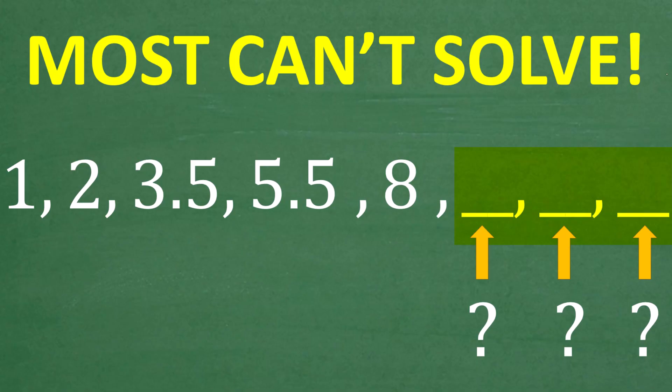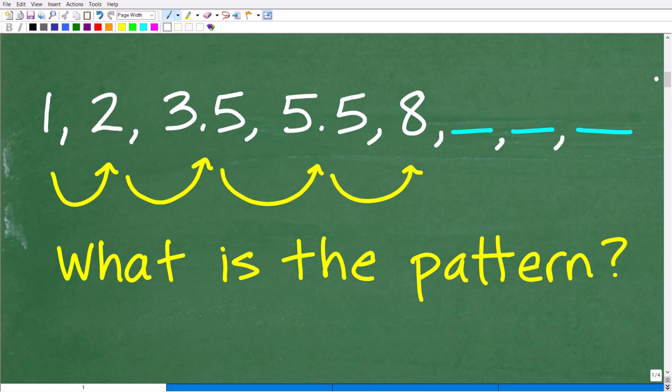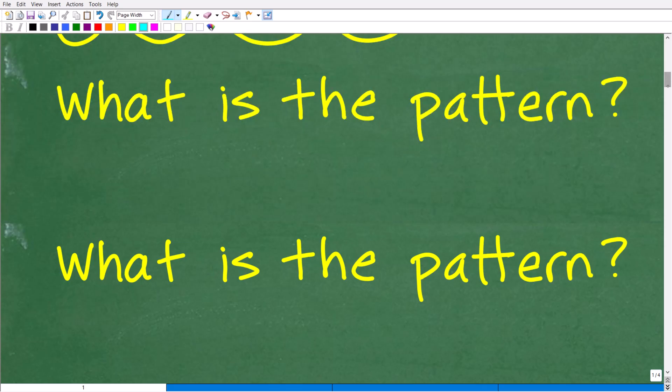But let's get into the solution. To answer the question here, we need to know what is the pattern between these numbers. So we're going from one to two, and then two to 3.5, 3.5 to 5.5, 5.5 to eight. What's going on? How are we going from one number to the next number? Because if we can't figure out the relationship between these numbers, there's no way we're going to be able to answer what the next three numbers in this sequence are. So how do we figure this out? Well, this is not so obvious.